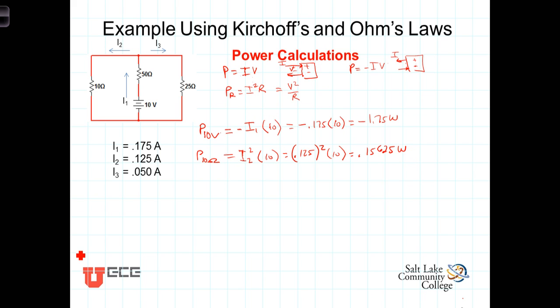The power associated with the 50 ohm resistor, P sub 50 ohms, is going to equal, now the current associated with that is I1, so that will be I1 squared times the 50 ohms.